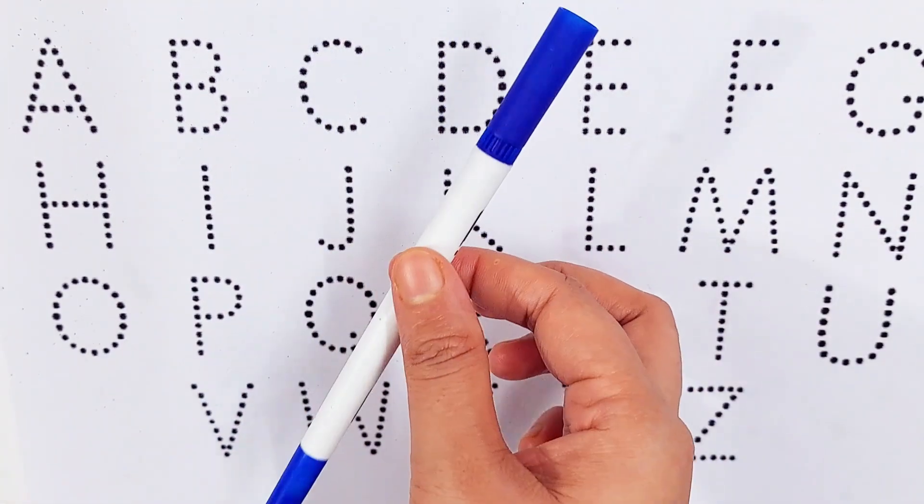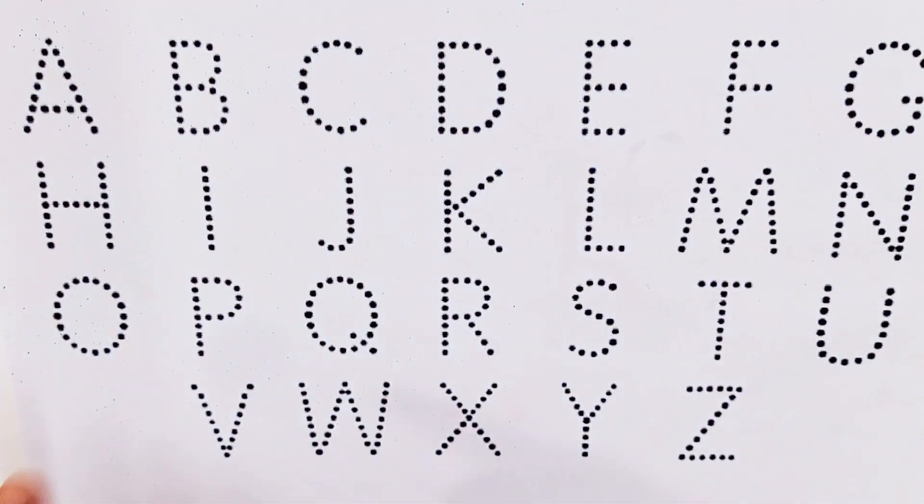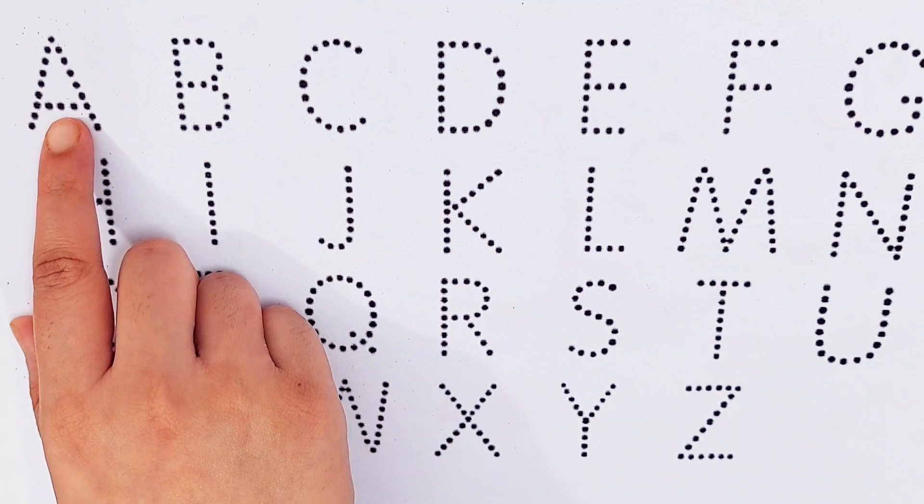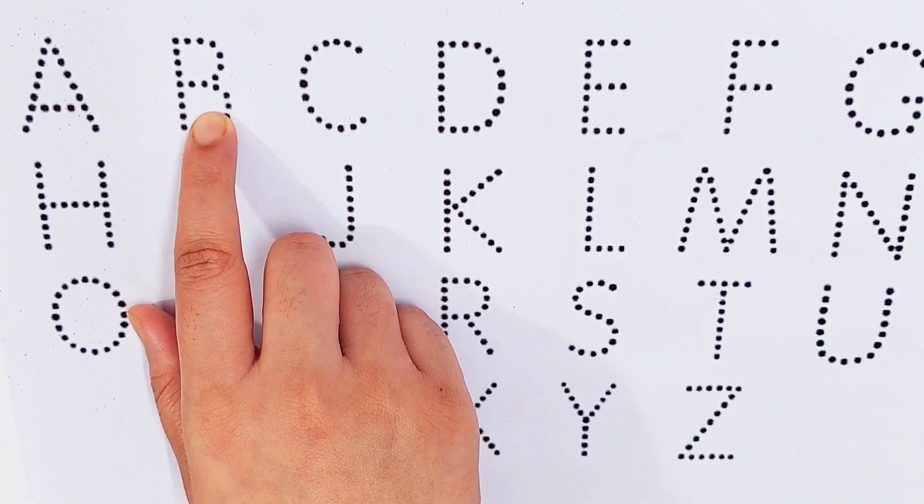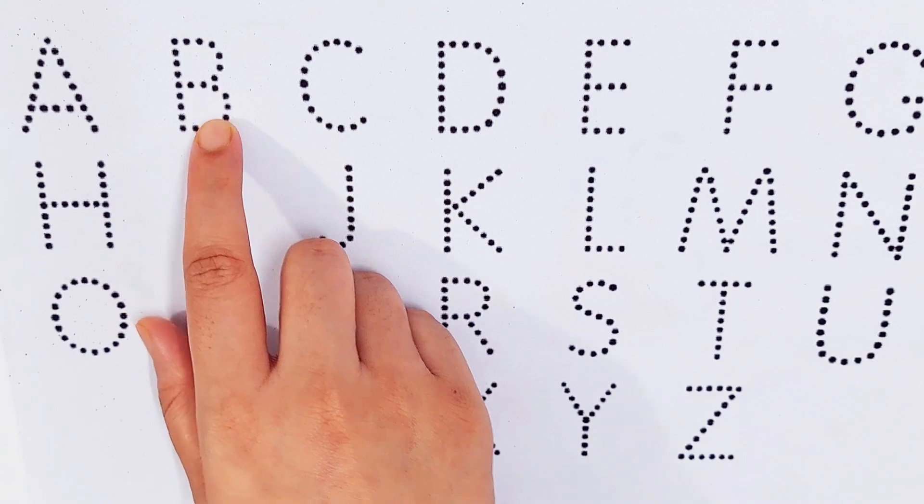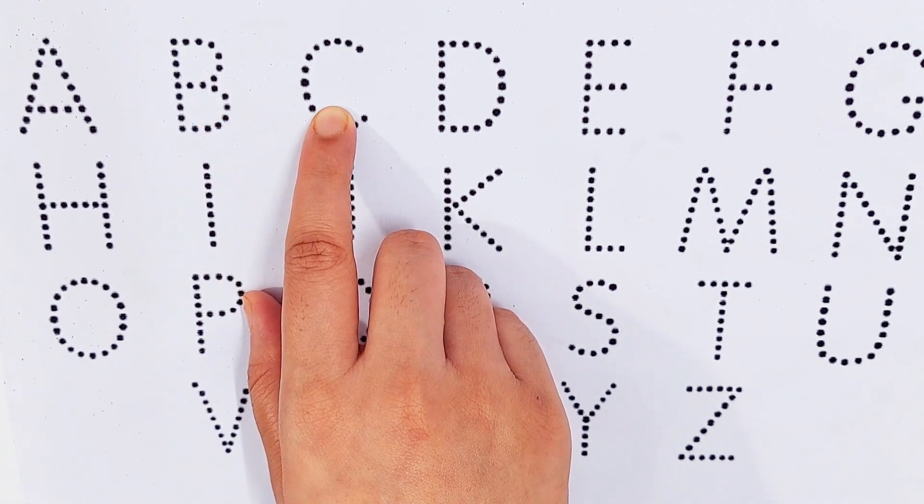Today we will learn alphabet. A for airplane, B for butterfly, C for caramel.